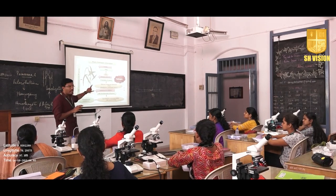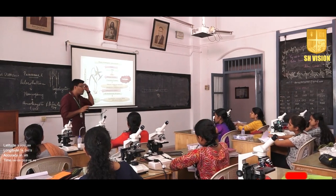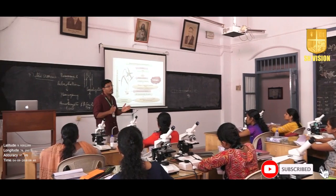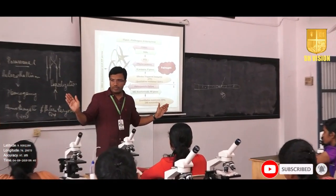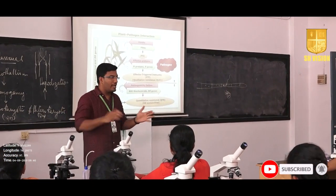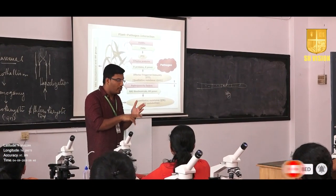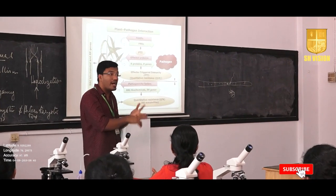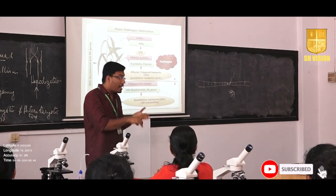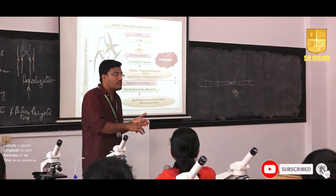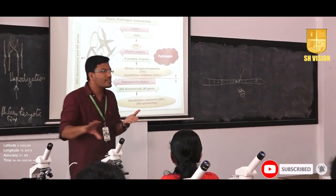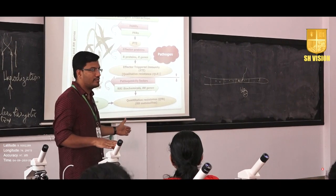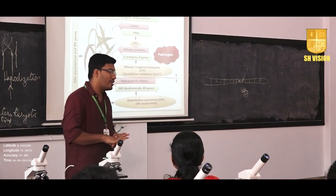Grab this picture and keep it in mind, and always correlate it with any of the pathogen interactions. You can learn about innate immunity, quantitative resistance, R gene and AVR interactions — all kinds of plant immunology is based on this structure. Thank you.